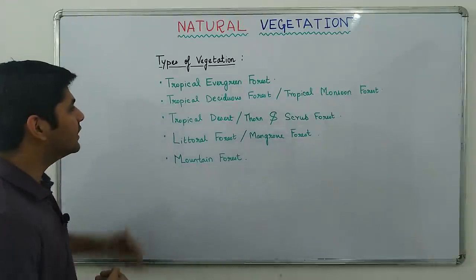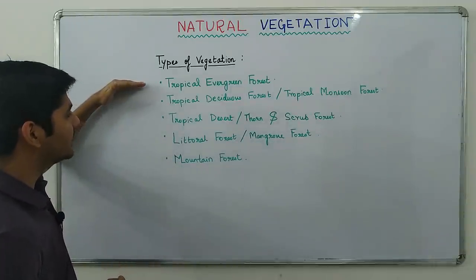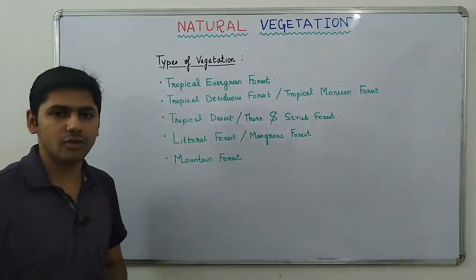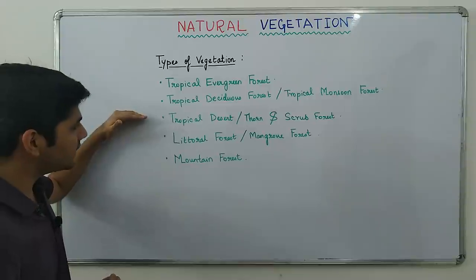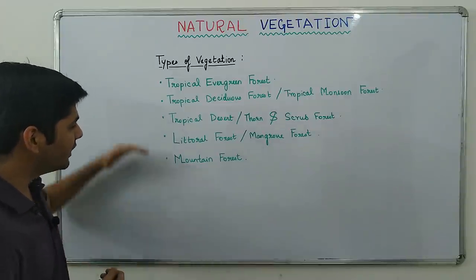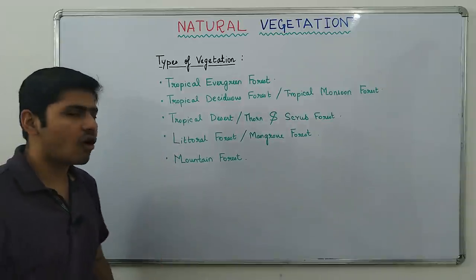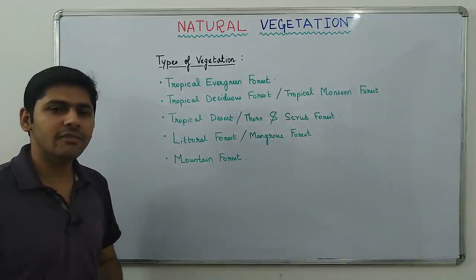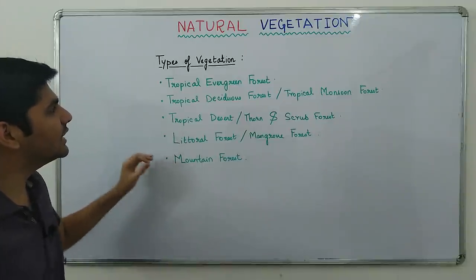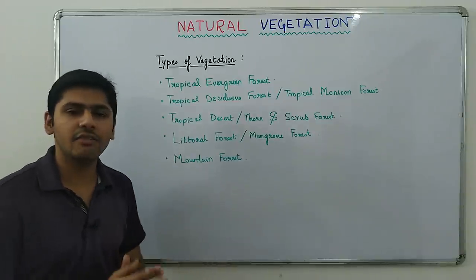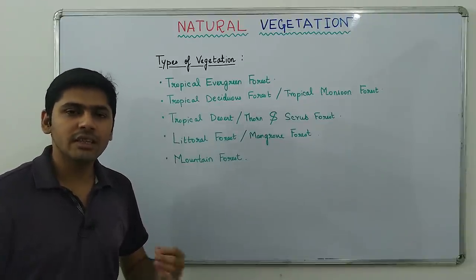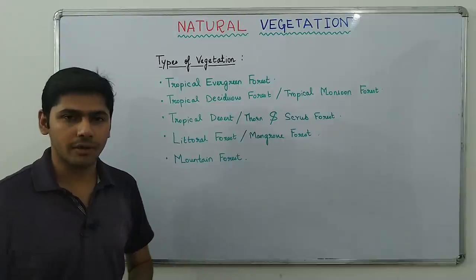The five types of natural vegetation found in India are: Tropical Evergreen Forest, Tropical Deciduous Forest (also called Tropical Monsoon Forest), Tropical Desert (also called Thorn and Scrub Forest), Littoral Forest (also called Mangrove Forest), and finally Mountain Forest. We will study them one by one.